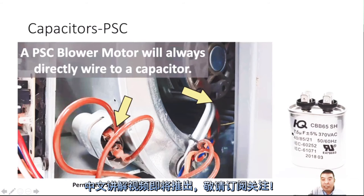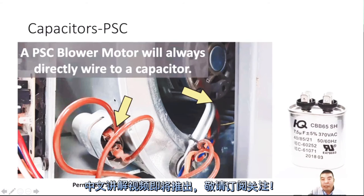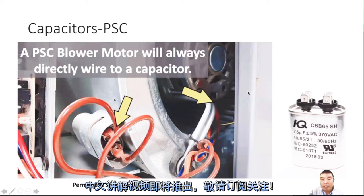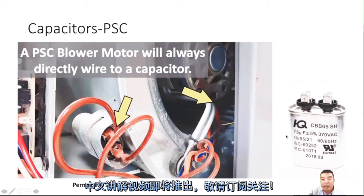For furnace capacitors, normally they are 7.5, 5, or 10 microfarad. We can see here this one is 7.5. This number depends on the horsepower of the motor. If yours is a one-horsepower motor, you may need a 7.5 or 10 microfarad. If it's only half horsepower, you may only need a 5 microfarad.